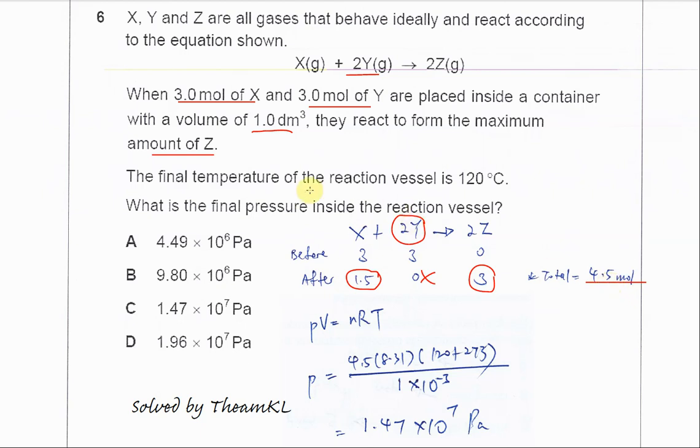Since this is a combined gas law calculation, we use PV = nRT. The moles is now 4.5, and pressure is what we need to find in Pascals. We need to make sure the volume is converted.